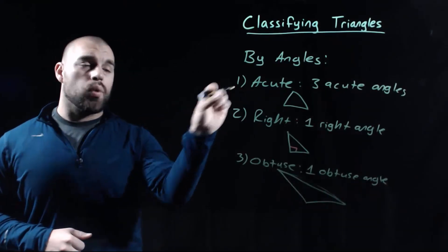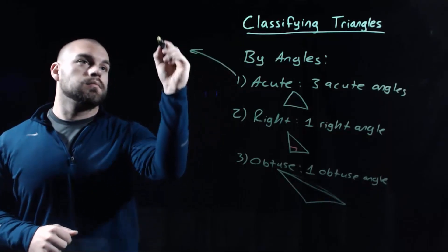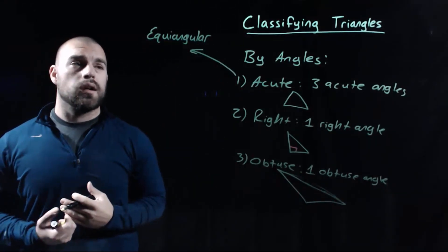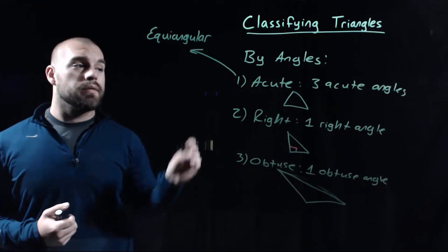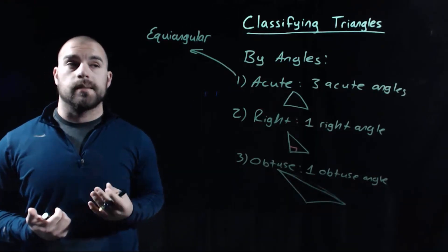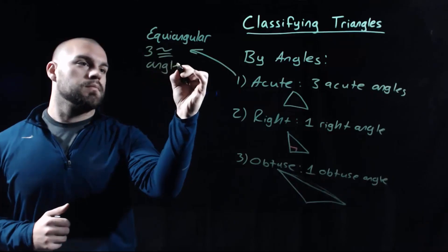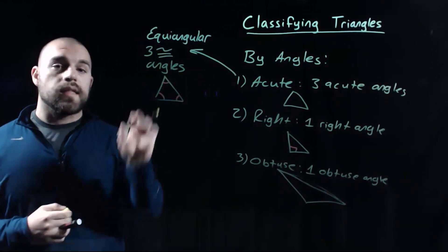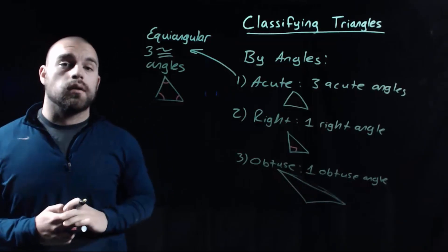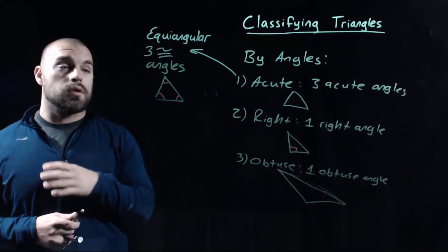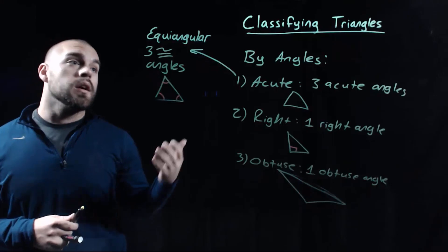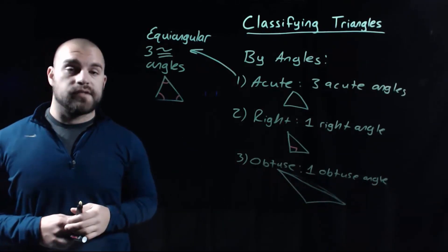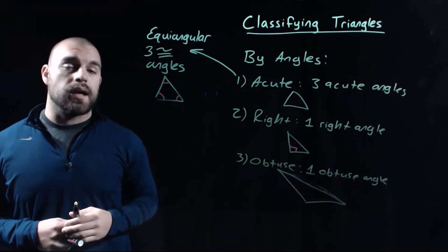There is one special kind of acute triangle called an equiangular triangle, where all three acute angles within the triangle are exactly the same size. This is very similar to the idea of an equilateral triangle — in fact, those things go together. If a triangle is equiangular it will also be equilateral, and vice versa.